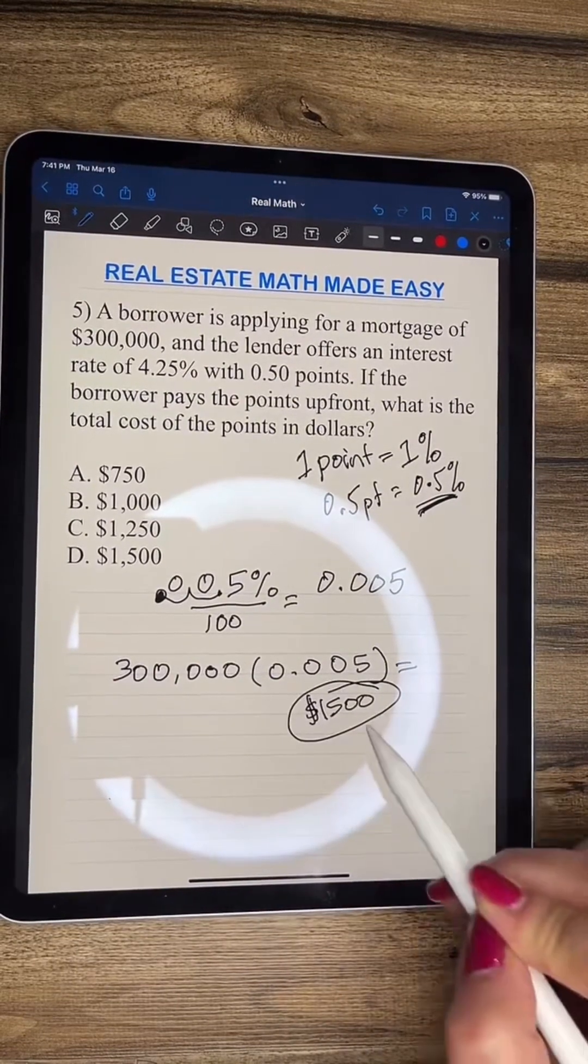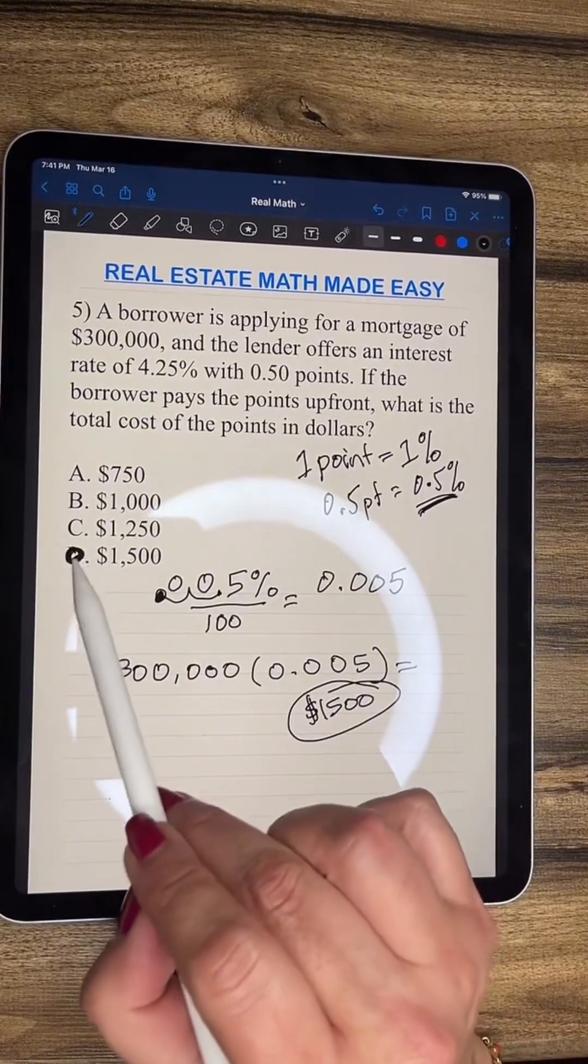So this is what you have to multiply by. So we have 300,000 times 0.005, and that equals 1,500. So he's going to have to pay $1,500. So the answer is D.